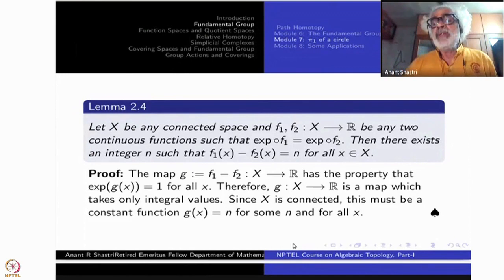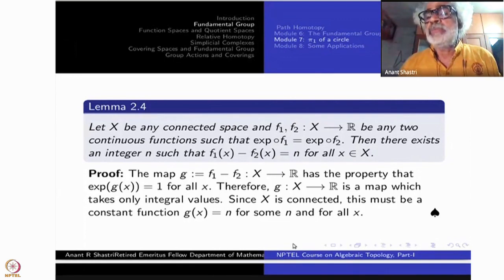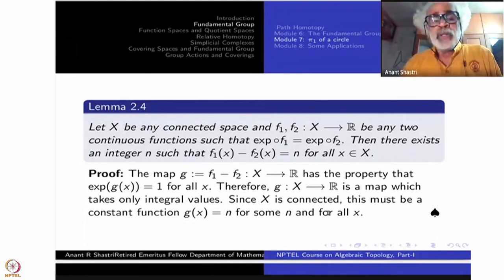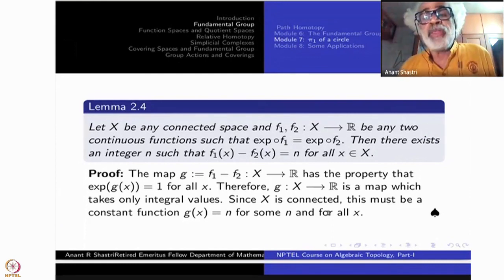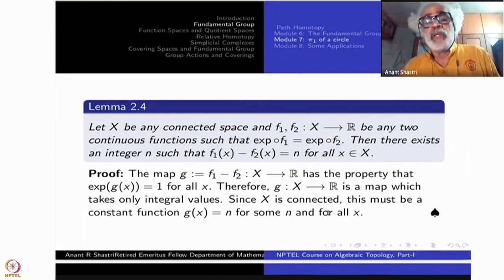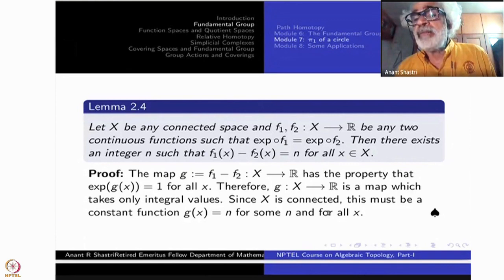How do you prove? Look at this difference function G, F₁ minus F₂. Make sense because they are taking the real value. So difference makes sense. The difference is also continuous. F and G are continuous, difference is continuous. This has the property to take exponential of G. Remember exponential is a homomorphism from additive group to multiplicative group. Therefore exponential of G is exponential of F₁ divided by exponential of F₂. But they are the same. So it is equal to 1. And this is true for all X.